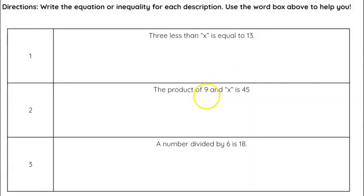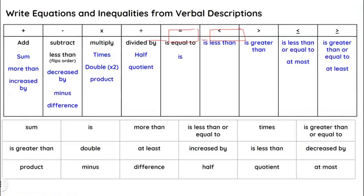Alright. So now using those words, we're going to write an equation or inequality. So we have three less than x is equal to 13. So if you notice, I boxed those keywords that we worked with. So three less than x. Now, less than is an interesting word. So if we go back to our chart, you can see right here, less than this word in parentheses says flips the order.